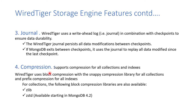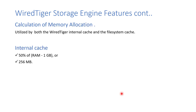Compression is another WiredTiger feature. The storage engine compresses data and indexes efficiently, using two compression libraries: zlib and zstd, with zstd being the default starting from MongoDB 4.2.